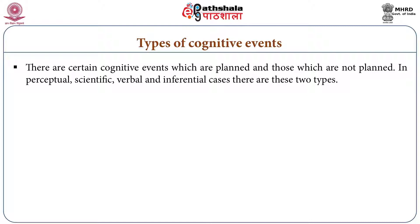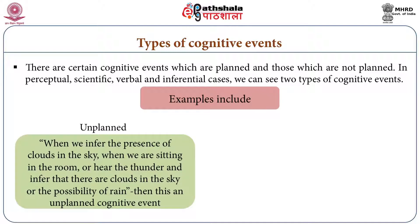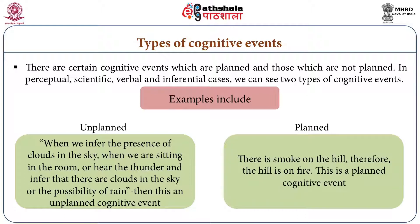When we infer the presence of clouds in the sky while sitting in a room listening to thunder, this cognitive episode is not planned and was not expected at all. But there is a case when we are searching for fire — we see smoke coming out of a mountain and infer that there is fire in the mountain because there is smoke.